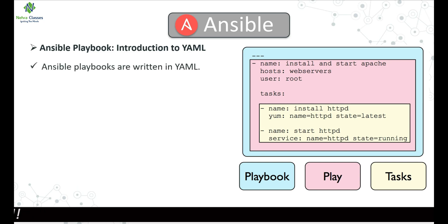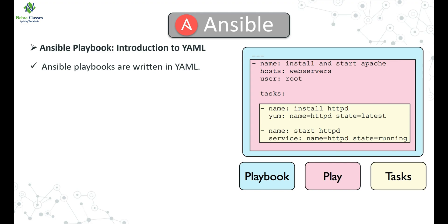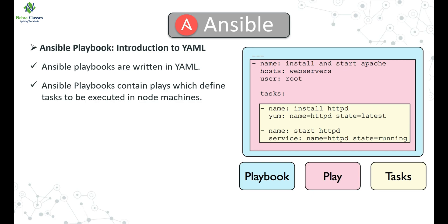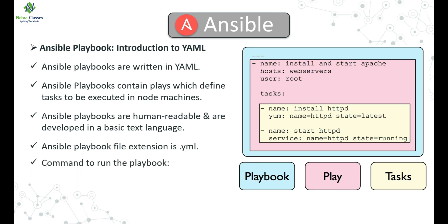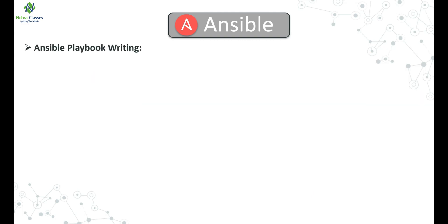Ansible playbooks are written in YAML. A playbook contains plays which define tasks to be executed on node machines. Ansible playbooks are human-readable and developed in a basic text language — YAML is human-readable. The Ansible playbook file extension is .yml, so whenever we create a playbook the extension must be .yml. The command to run a playbook is `ansible-playbook` followed by the name of the YAML file. The full syntax is `ansible-playbook` followed by the entire path to the YAML file.